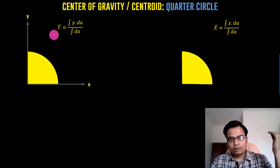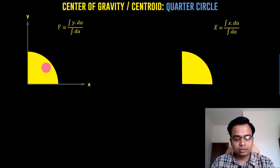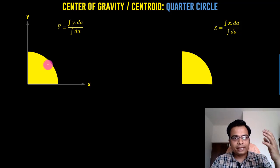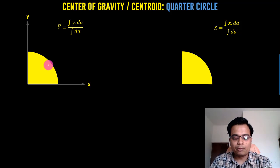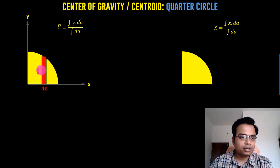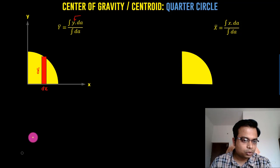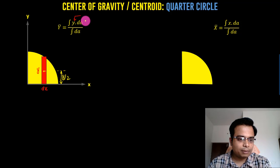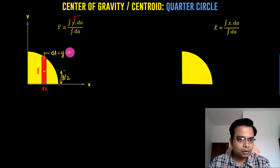First we are going to calculate the y-coordinate of the centroid of this quarter circle, and for that I need a vertical strip. Vertical strip for y-coordinate, horizontal strip for x-coordinate — that's something I would suggest all of you to implement. In front of you is a vertical strip having a height of y, and this y is the y-coordinate of the centroid of this strip, so this distance is y/2. The area element dA is equal to y·dx.